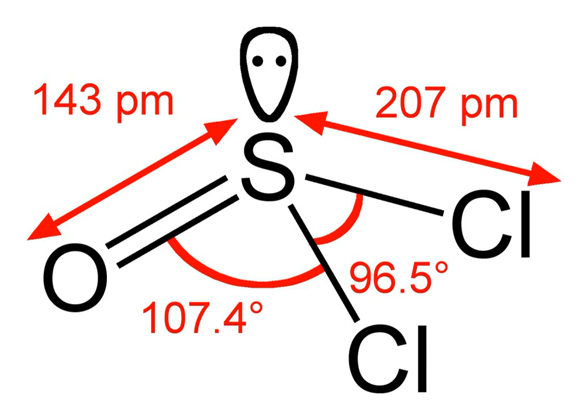Other methods include syntheses from phosphorus pentachloride, chlorine and sulfur dichloride, or phosgene. SO2 plus PCl5 yields SOCl2.